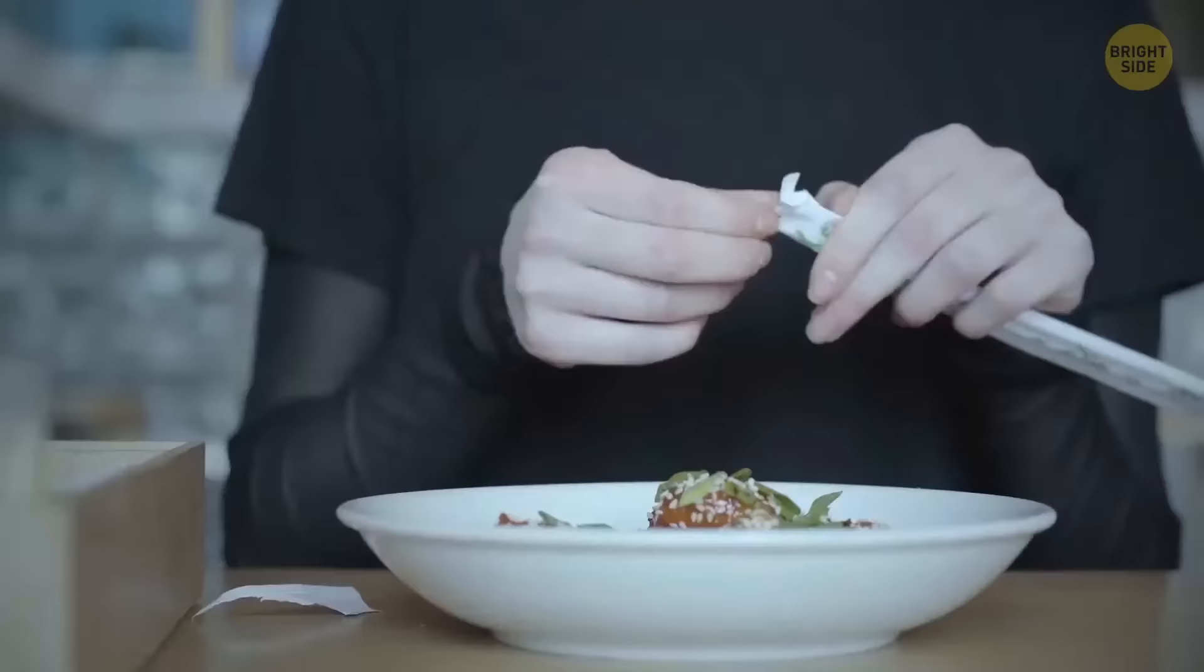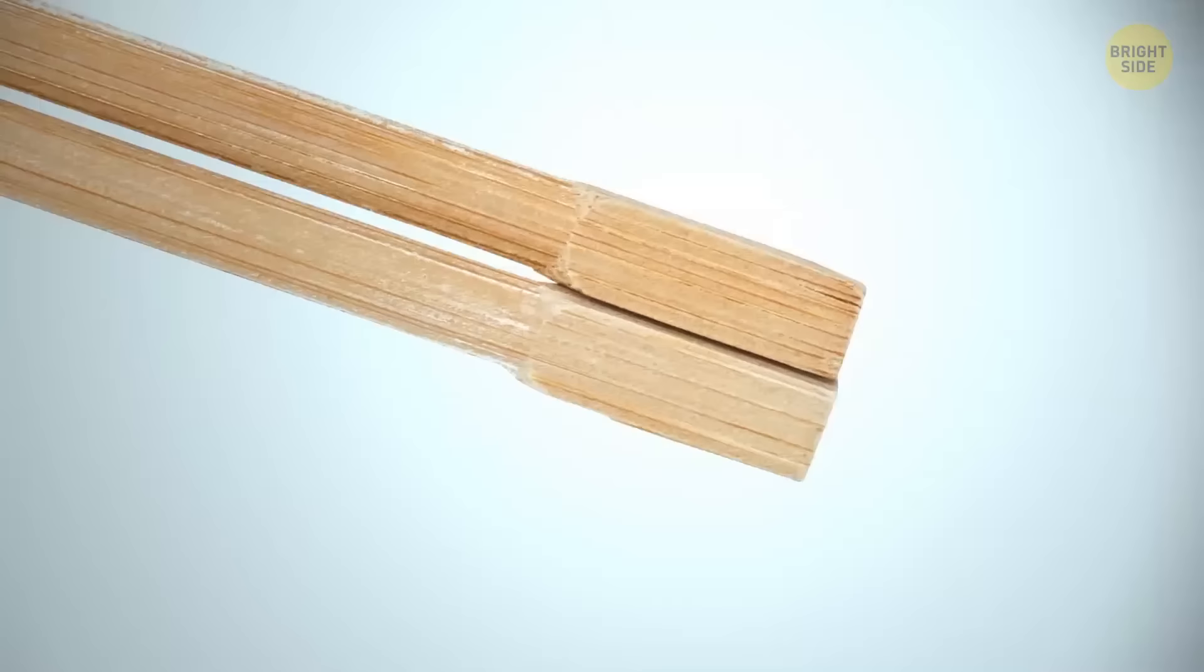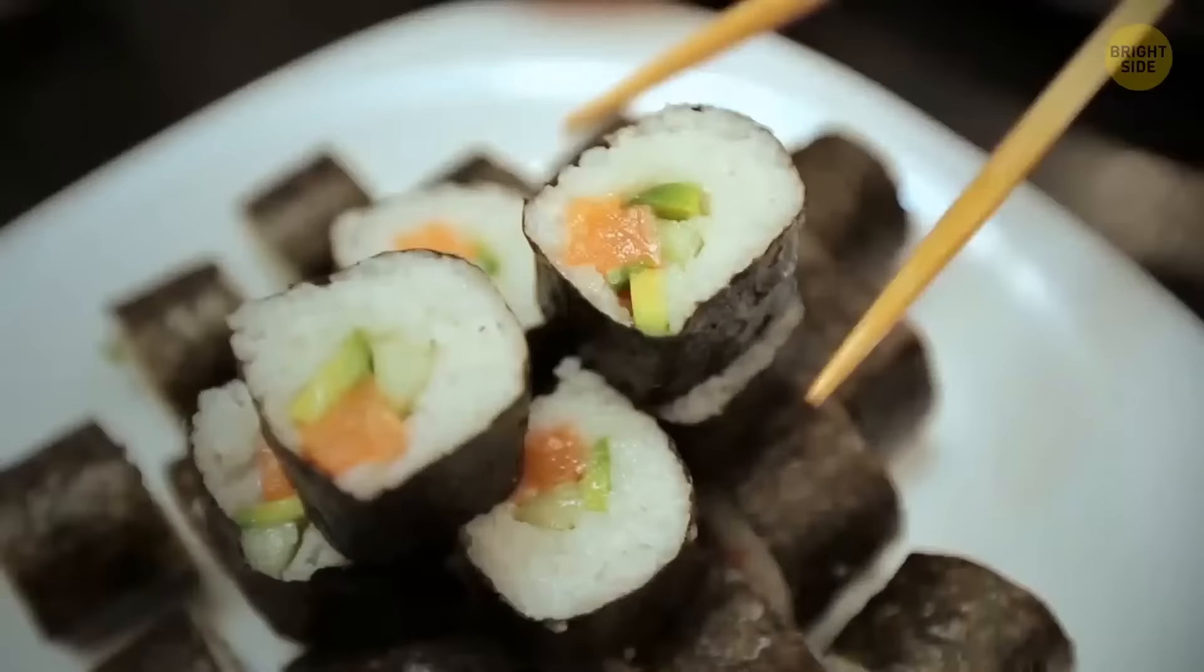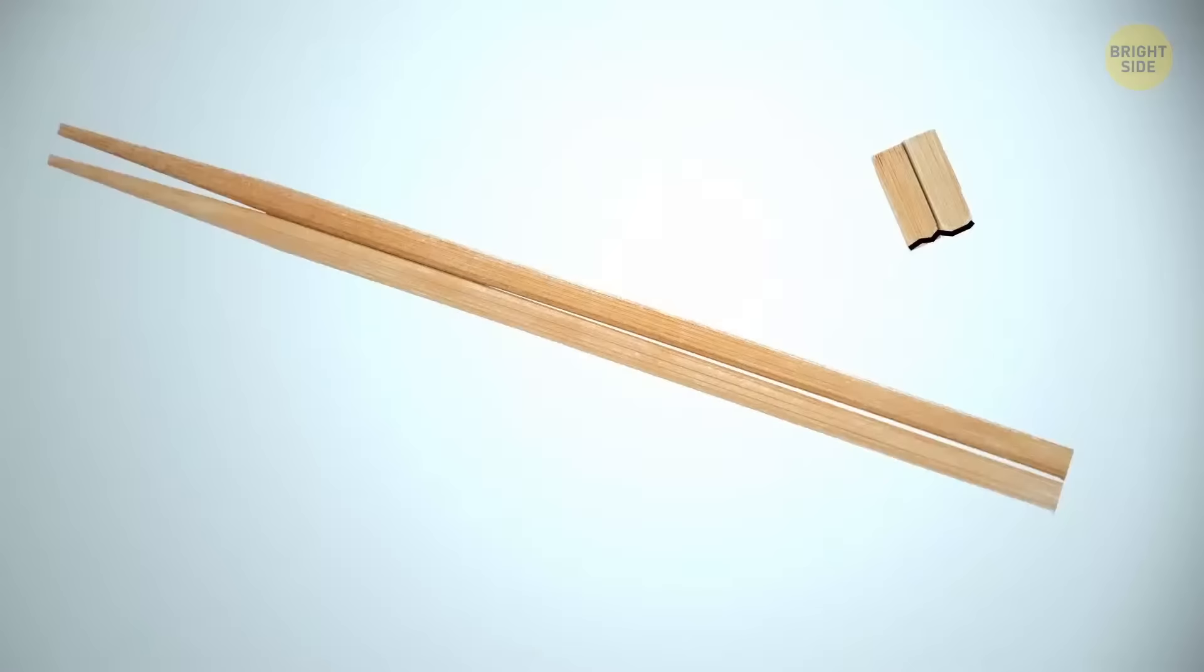You can make a makeshift stand for disposable chopsticks. They have a sort of lump at one side before you split the pair. So, next time you have a sushi dinner, try breaking off that lump instead of regular splitting. When you want to take a sushi break, just place the stick on this stand.